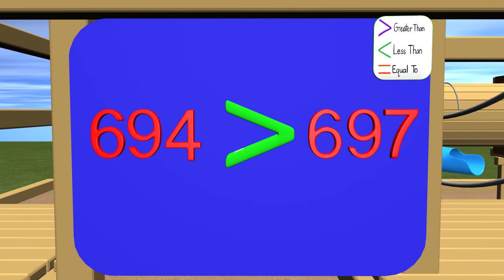Here we have another set of numbers to compare. On the left we have 694, and on the right we have 697. Can you tell me which number is bigger? Well, my initial thought is that they look almost the same. But let's compare them like we did before.